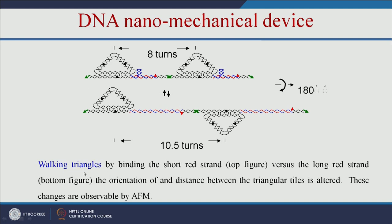The next example is the walking triangle. You can have a DNA sequence, and when you add a short fragment of single-stranded DNA (the red color one), it binds to single-stranded DNA between two triangles — some unbound DNA forms a loop-like structure. When the red color strand, which matches the blue color DNA, forms a hybridization, the triangle will rotate 180 degrees and move to the bottom. This is another example of a DNA-based nano-mechanical device.